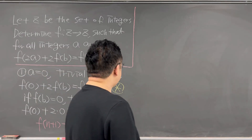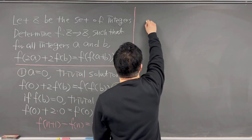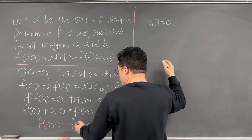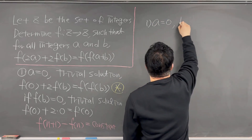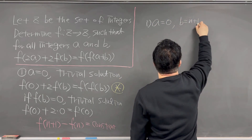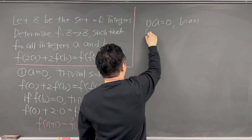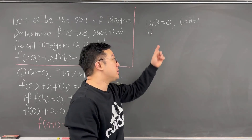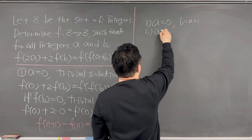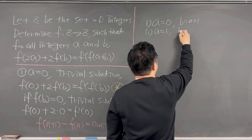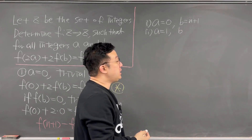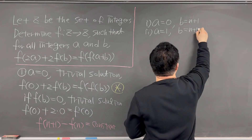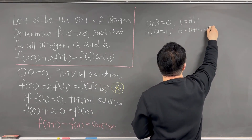So I'll be talking about two cases. Case number one: a is equal to 0 and b is equal to n plus 1. Then for case number two, I'll increase the value of a by 1, so a is equal to 1. Then the value of b should decrease by 1, so b has to be n plus 1 minus 1, which is equal to n.